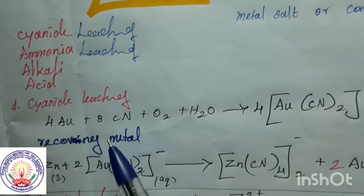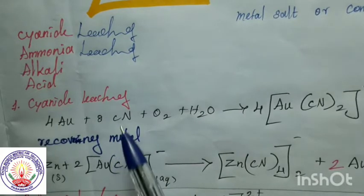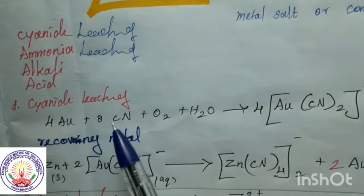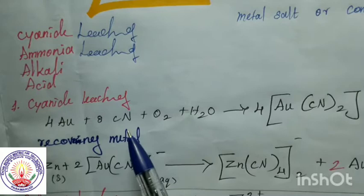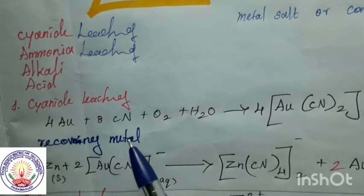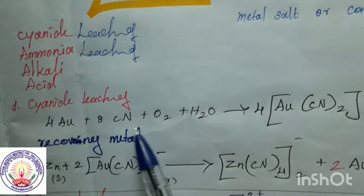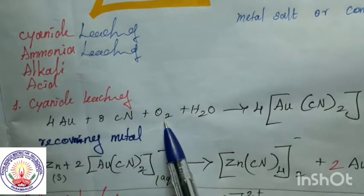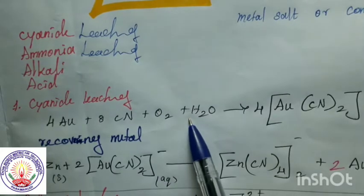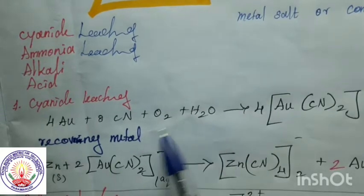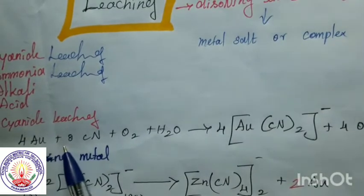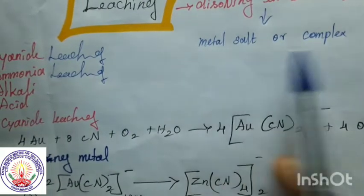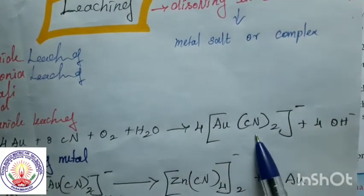For gold, cyanide leaching is a suitable method. The ore of gold is treated with sodium cyanide in an aerated dilute aqueous solution of sodium cyanide — aerated meaning oxygen is present and it is in aqueous form, so water is present. By leaching, they form a metal complex.